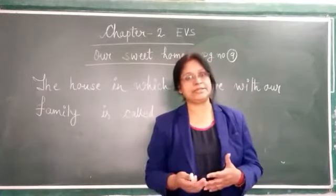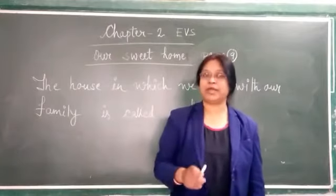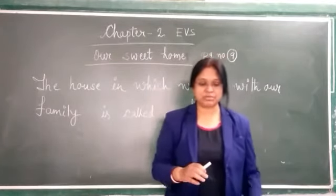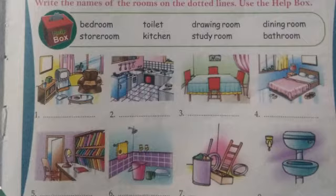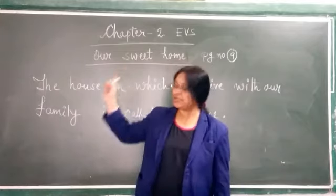If you go back to your book, you can see a chart where you can write notes. There are pictures showing the bedroom, toilet, drawing room, dining room, storeroom, kitchen, study room, and bathroom. These pictures are all included and everything is mentioned.